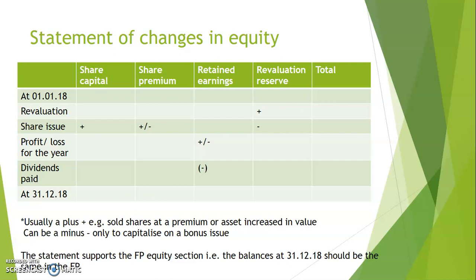I would memorize this table because AQA will expect you to know the columns, the rows, and the headings. The first row is opening balances — put them in if you have any. The next row is revaluation: if an asset is revalued, that figure only comes into the revaluation reserve column. Obviously opening balances you use if you have them, but revaluation only uses that specific column, and as the asset goes up you add that increase.